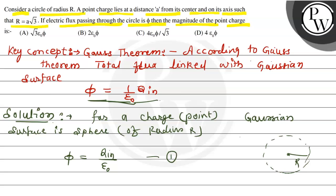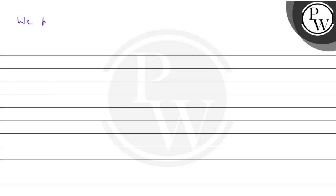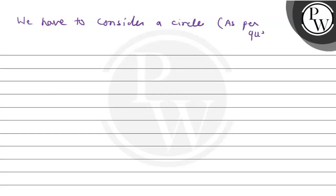But in the question, we are given that we have to consider a circle. As per the question, we have to consider a circle. The area of circle — children, area of circle is πr². This is the surface area; surface area of a circle equals πr².